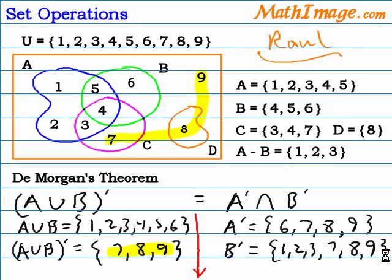Next, we take the intersection of those two to resolve the expression on the right side of the equation. The intersection is A naught and B naught. So the numbers in common are 7, 8, and 9 from both sets.